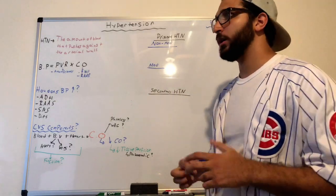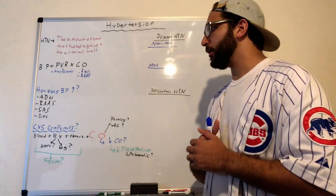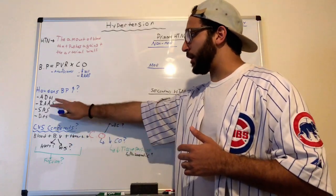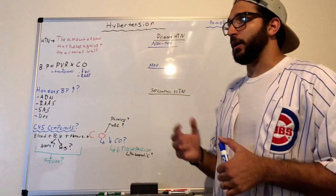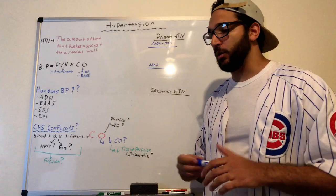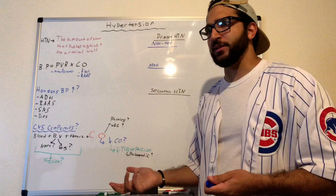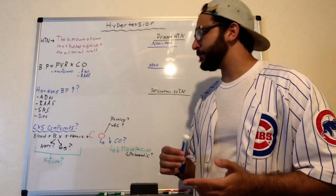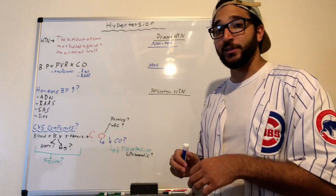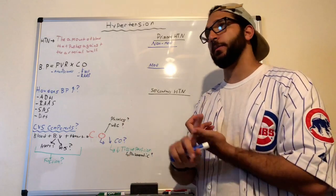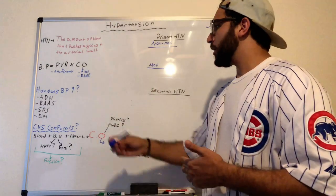The first compensatory mechanism is antidiuretic hormone (ADH). The second is the sympathetic nervous system — your fight-or-flight response. The sympathetic nervous system causes the adrenal medulla to release catecholamines such as norepinephrine and epinephrine, which increase heart rate and blood pressure.